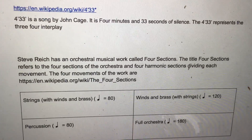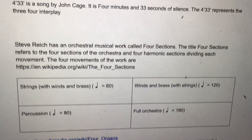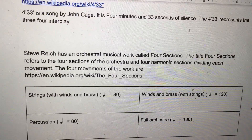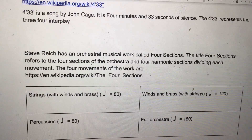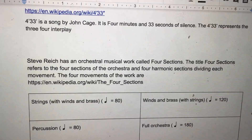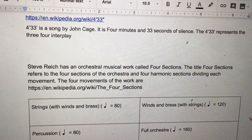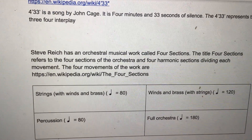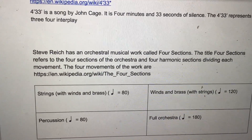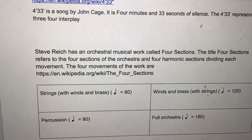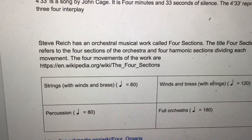Steve Reich has an orchestral musical work called Four Sections. The title refers to the four sections of the orchestra and four harmonic sections dividing each movement. The four movements of the work are strings, percussion, winds and brass, and full orchestra.